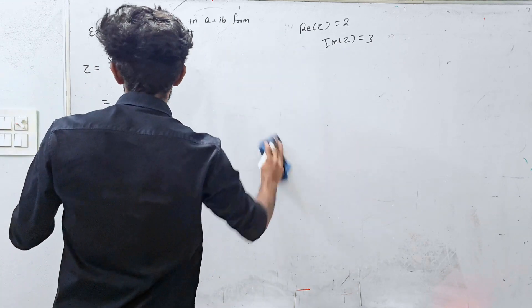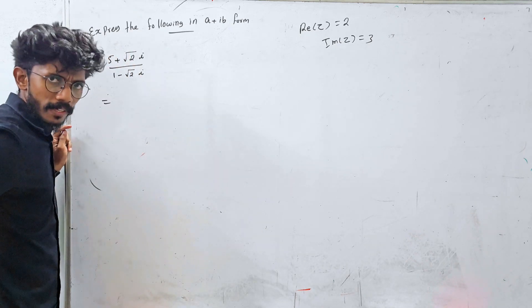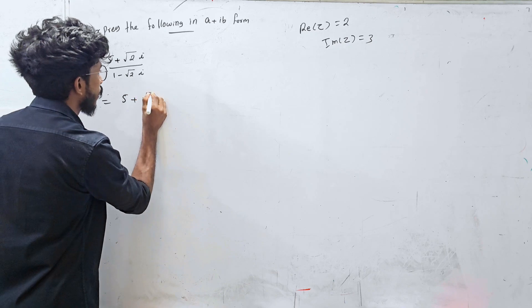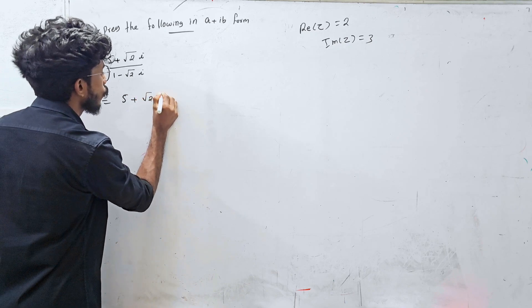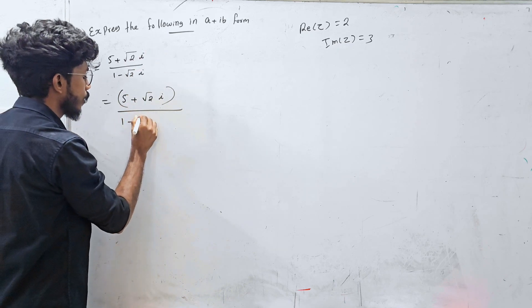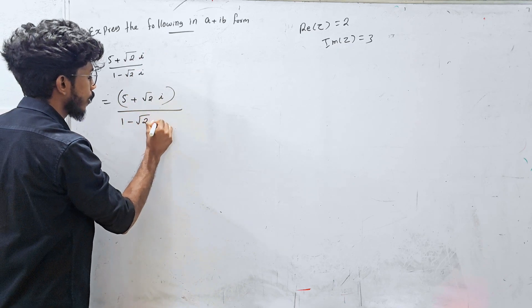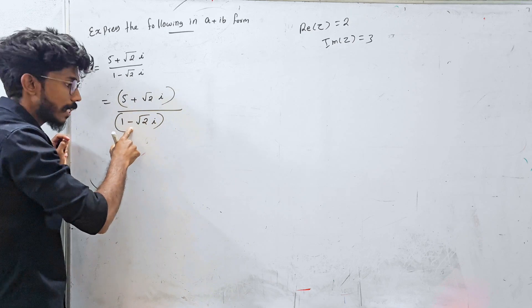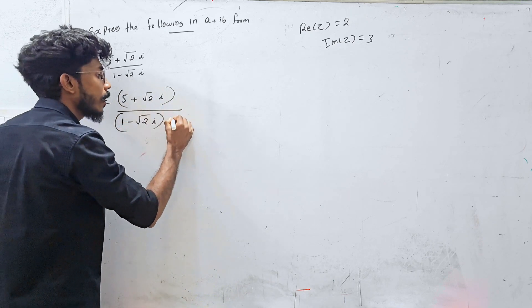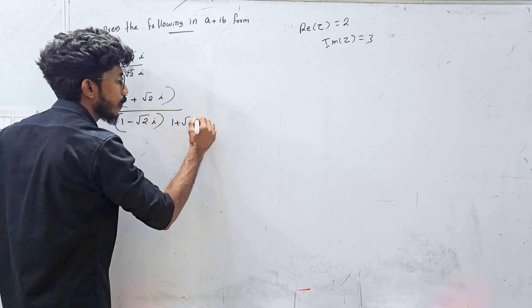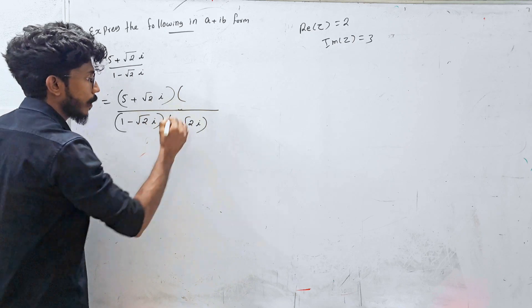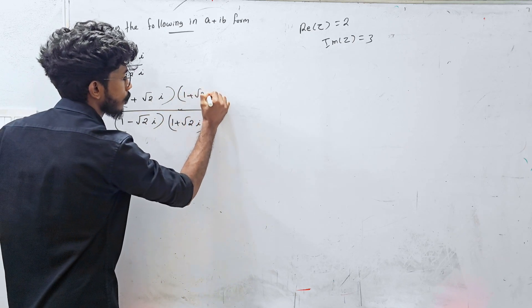Now let's look at dividing two complex numbers. To divide, you multiply both numerator and denominator by the conjugate of the denominator. The conjugate here is 1 minus root 2i, so we multiply by 1 plus root 2i.